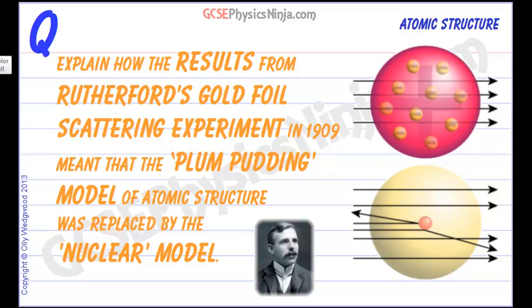In 1909, Rutherford and his associates Marsden and Geiger carried out an experiment which would change the way that scientists thought about atoms and the structure of an atom.